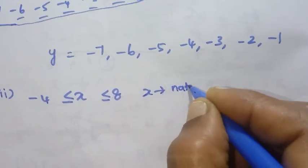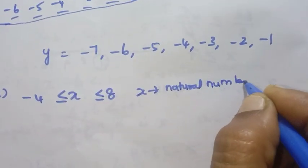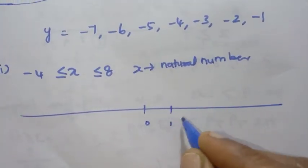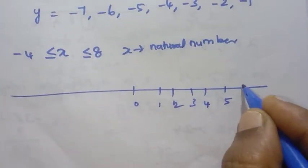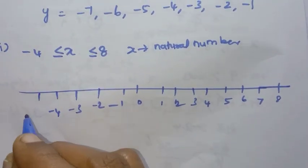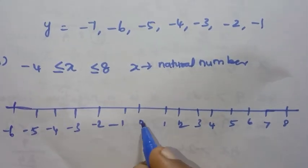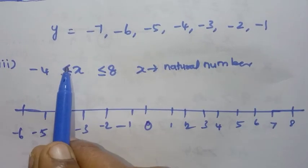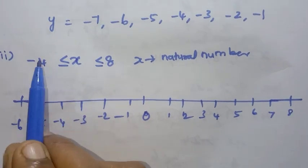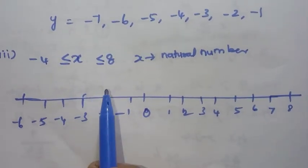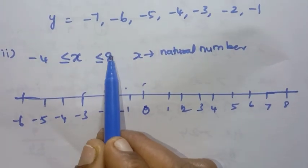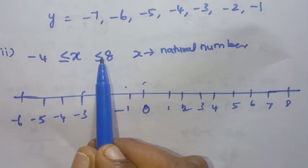For the next problem: minus 4 less than or equal to x less than or equal to 8. On the number line: 0, 1, 2, 3, 4, 5, 6, 7, 8 on the positive side and minus 1, minus 2, minus 3, minus 4, minus 5, minus 6 on the negative side. Since x is less than or equal to 8 and greater than or equal to minus 4, x takes all values from minus 4 to 8.